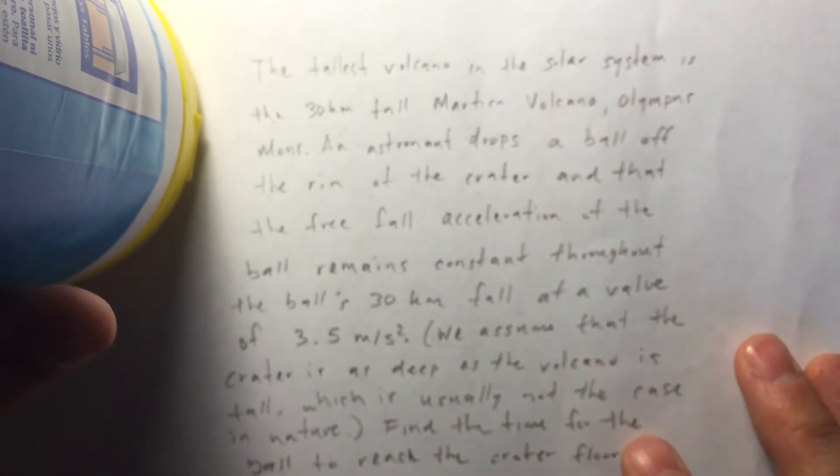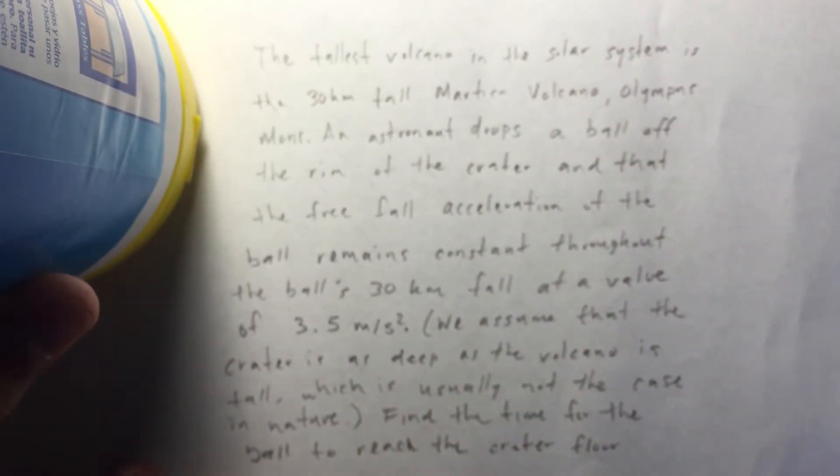Our problem says, the tallest volcano in the solar system is the 30 kilometer tall Martian volcano, Olympus Mons. An astronaut drops a ball off the rim of the crater, and that the free fall acceleration of the ball remains constant throughout the ball's 30 kilometer fall, at a value of 3.5 meters per second. We assume that the crater is as deep as the volcano is tall, which is usually not the case in nature.